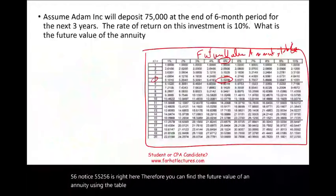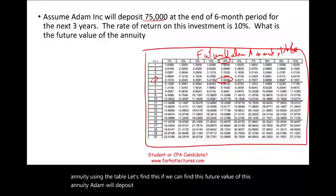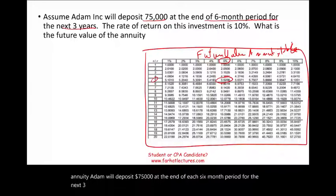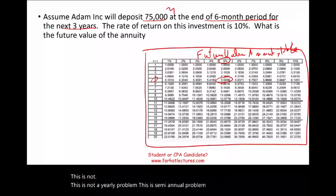Adam will deposit $75,000 at the end of each six-month period for the next three years. Notice Adam is making the payment twice a year — so this is a semi-annual problem. Three years means N equals 6 periods. The rate of return is 10% annually; since this is semi-annual, we divide by two: interest rate equals 5%.